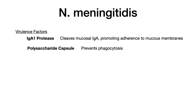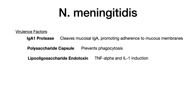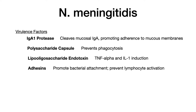The other important virulence factor is the presence of a polysaccharide capsule. This prevents phagocytosis, and we'll talk about this in just a second because it's extremely high yield to know for exams. There's also a lipooligosaccharide endotoxin — because this is a very potent endotoxin, it induces IL-1 and TNF-alpha, so you can get overwhelming sepsis. And then there are adhesins, which promote bacterial attachment and prevent the activation of lymphocytes. From this list, the highest yield is the polysaccharide capsule.